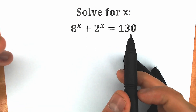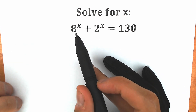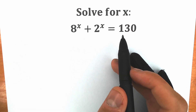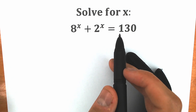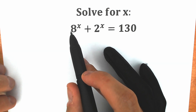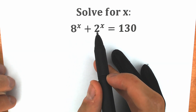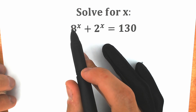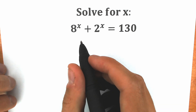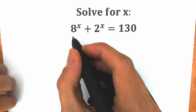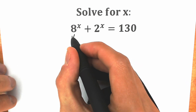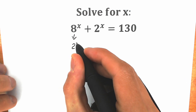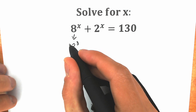Basically we have all different bases. But it will be really helpful for us when we create the same base. Let's look at this 8 and 2 — basically we can write 8 as 2 cubed. So instead of this 8, let's write 2 cubed.